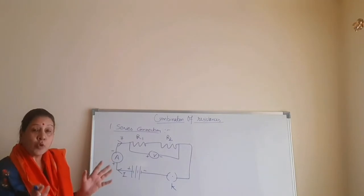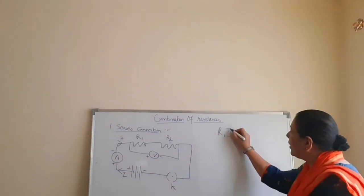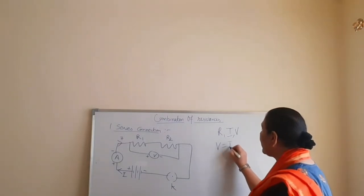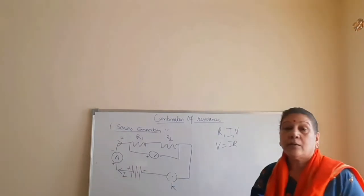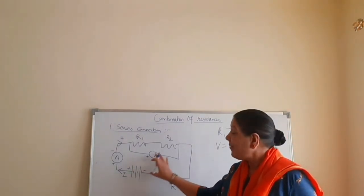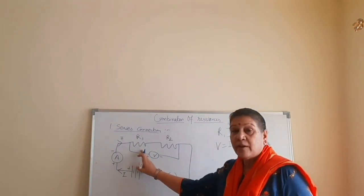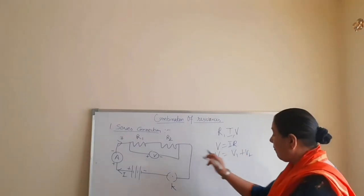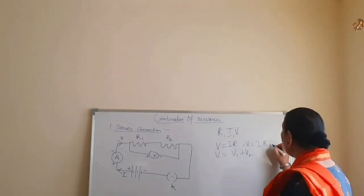If the total resistance of the system is R, the electric current is I, and the electric potential is V, then V is equal to IR. The equivalent resistance is R. V — the potential of the electric source — is measured by the voltmeter. So V is equal to V1 plus V2, where V1 is equal to IR1 and V2 is equal to IR2.